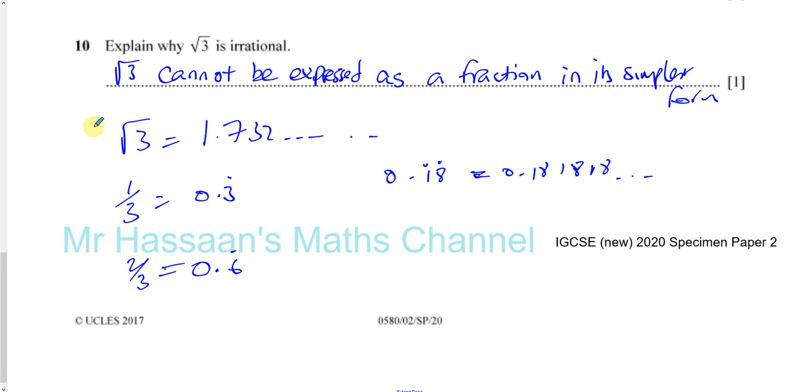So if that statement's enough, you could also say it continues without any pattern. The decimal places continue without any pattern. I'm sure they would accept that as well. So it's just asking for a little explanation worth one mark. So that should be perfectly fine.